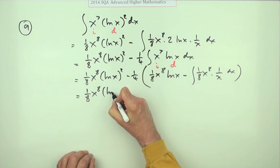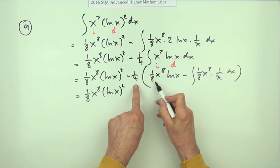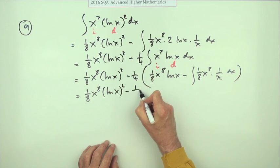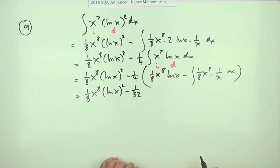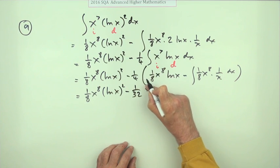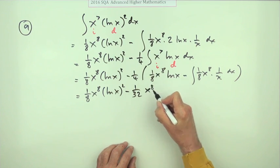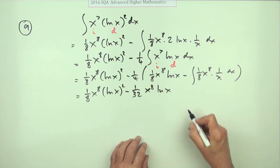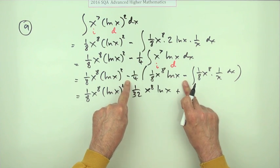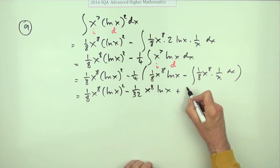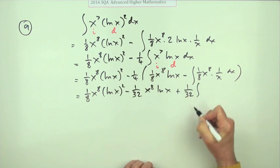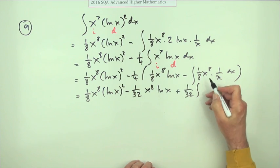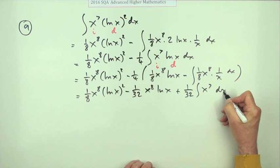Tidy it up. Right, this part here is going to be minus 1/32. These numbers are getting bigger in the denominator. x^8 ln x, look at all these common factors and things, lovely. Plus 1/32 the integral of that, knocks that back down to x^7 dx.